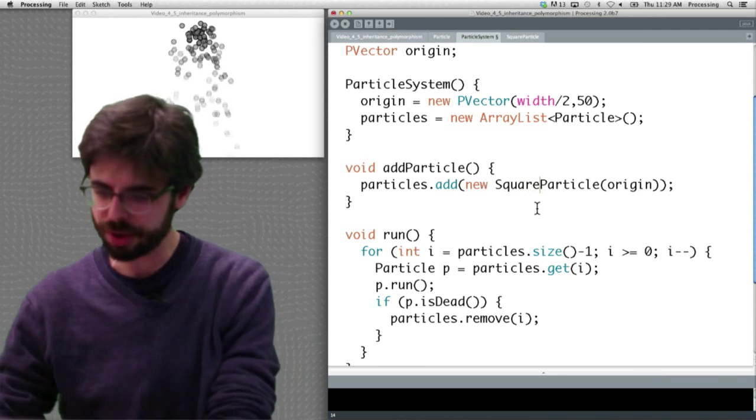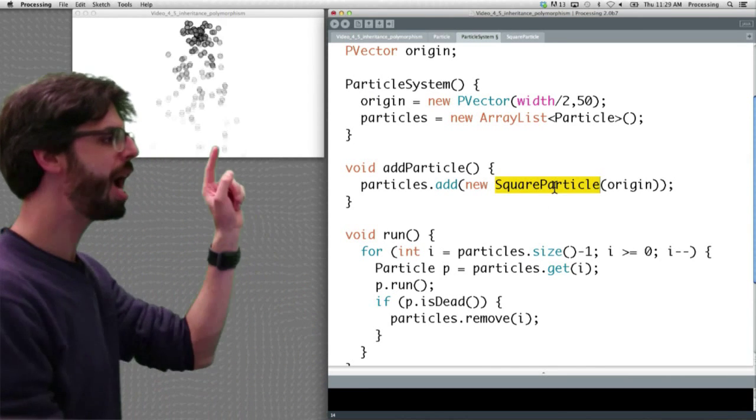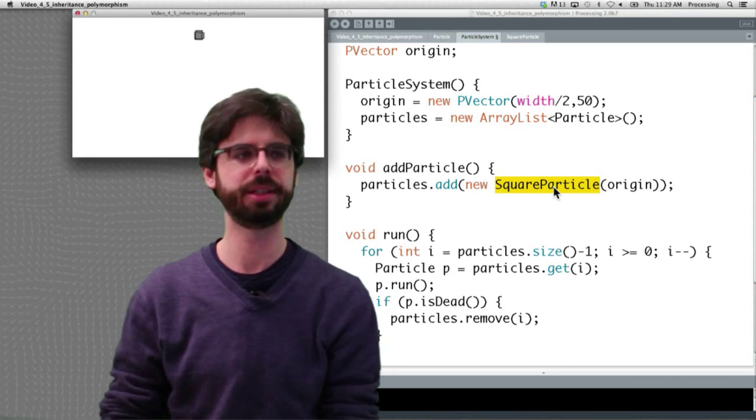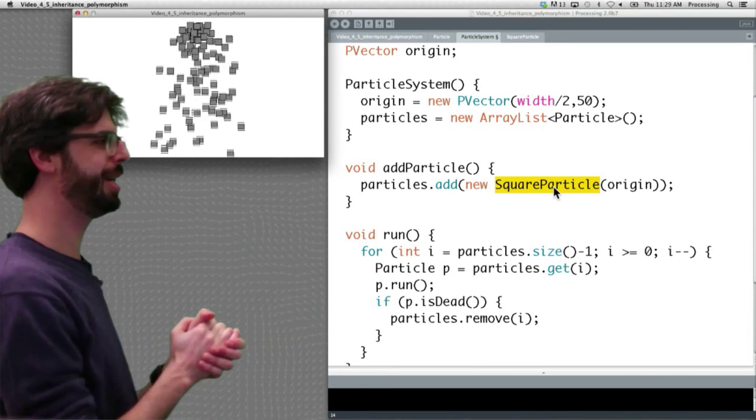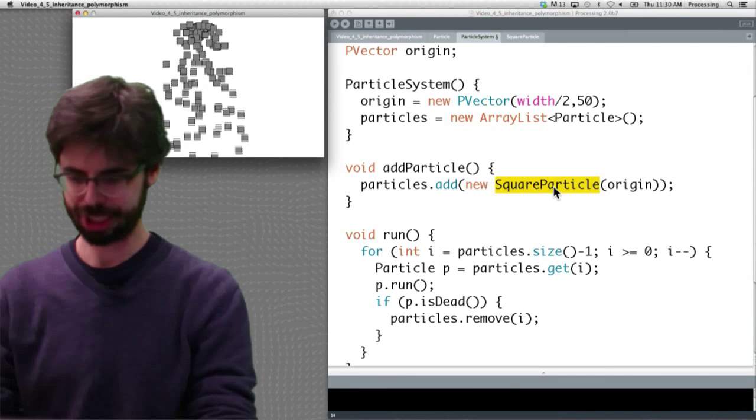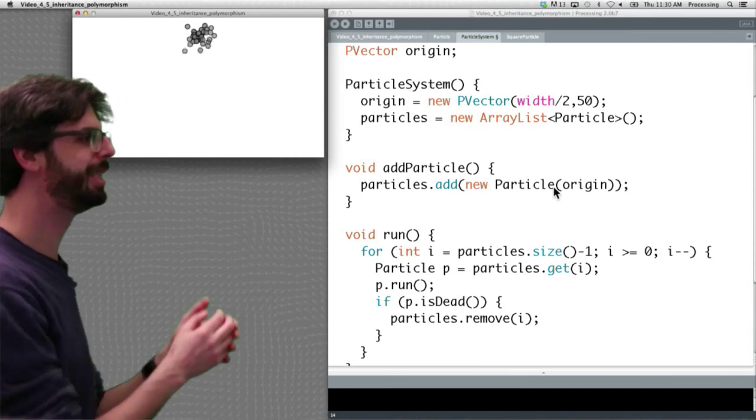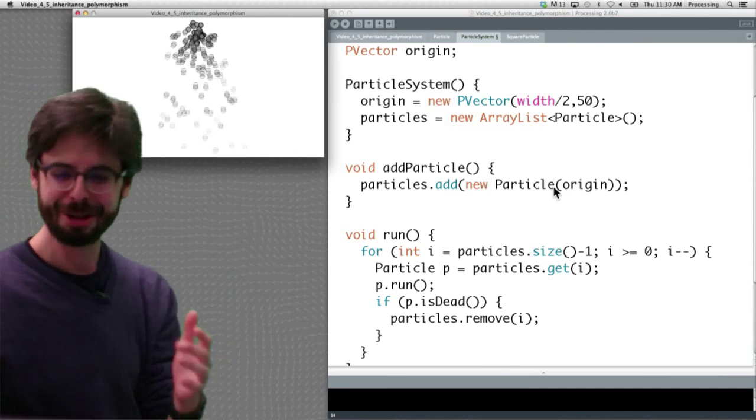Instead of when I add a particle adding a regular particle, I'm now going to add a square particle, and I'm going to run this. Whoa, there it is. I see square particles. Change it back to particle. I see circular particles.